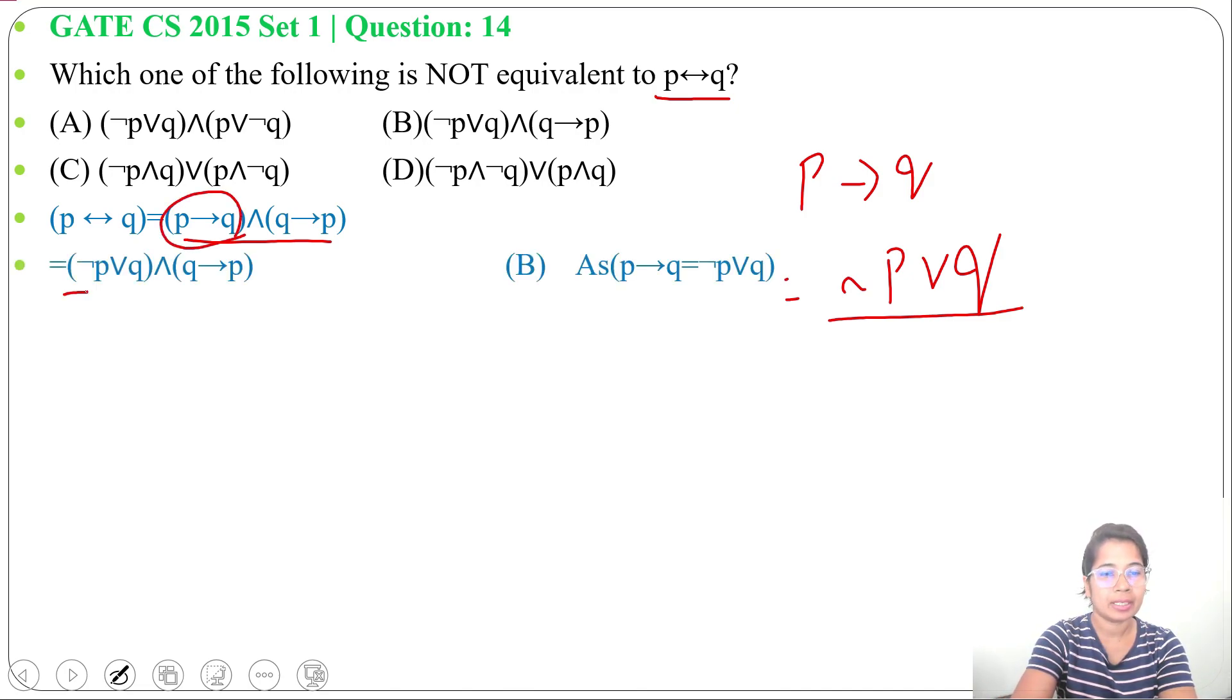I'll get negation P or Q, and I'll change this one to Q implies P. Now compare with the option, it's present in option B: negation P or Q and Q implies P. So P double implication Q is equivalent to negation P or Q and Q implies P.